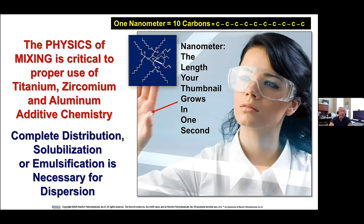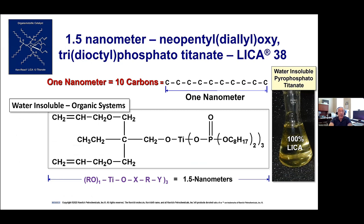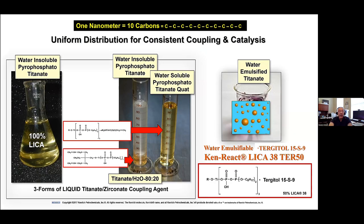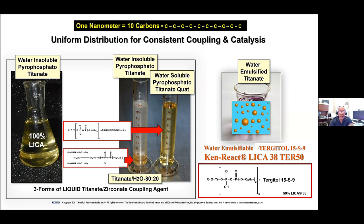You need complete distribution, solubilization, or emulsification to get the dispersion. These titanates are a little over 1.5 nanometers in length according to the length of the carbons. If you're trying to put the titanate into the water phase — when I first gave a talk, someone said titanates make terrible coupling agents because they're hydrolytically unstable — but he was talking about simple alkyl titanates like TBT and TIPT. We weren't making those; we were making new animals. Sometimes what you think you know, it ain't so — and that's the biggest problem: having a mental mindset against something new and novel.